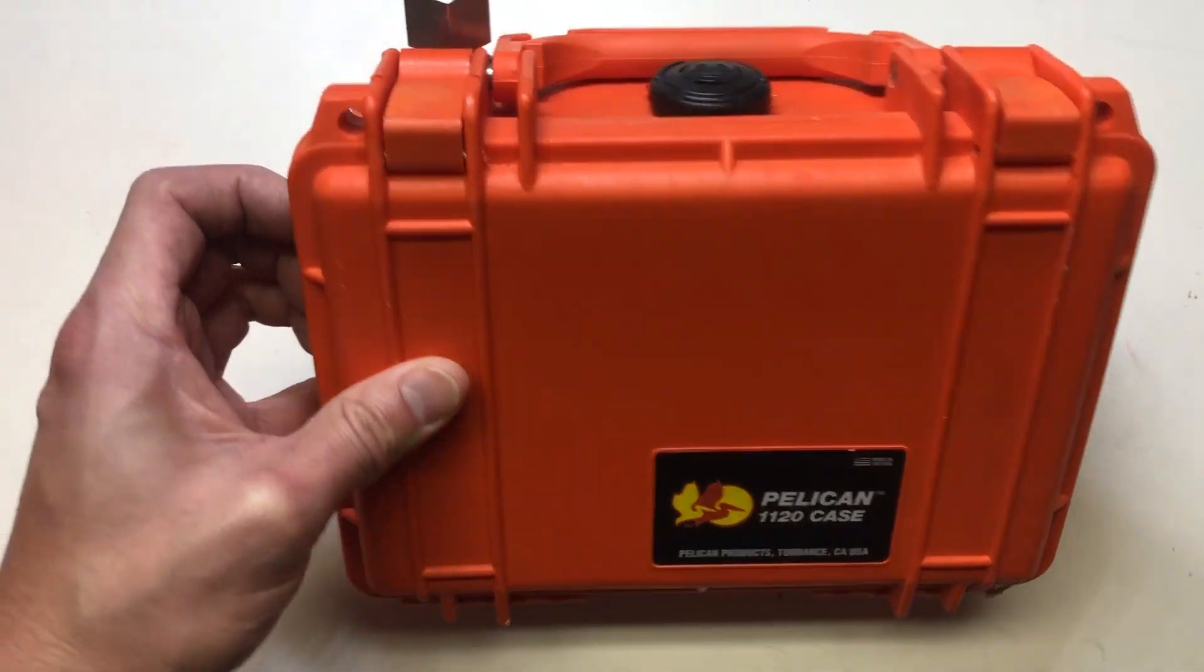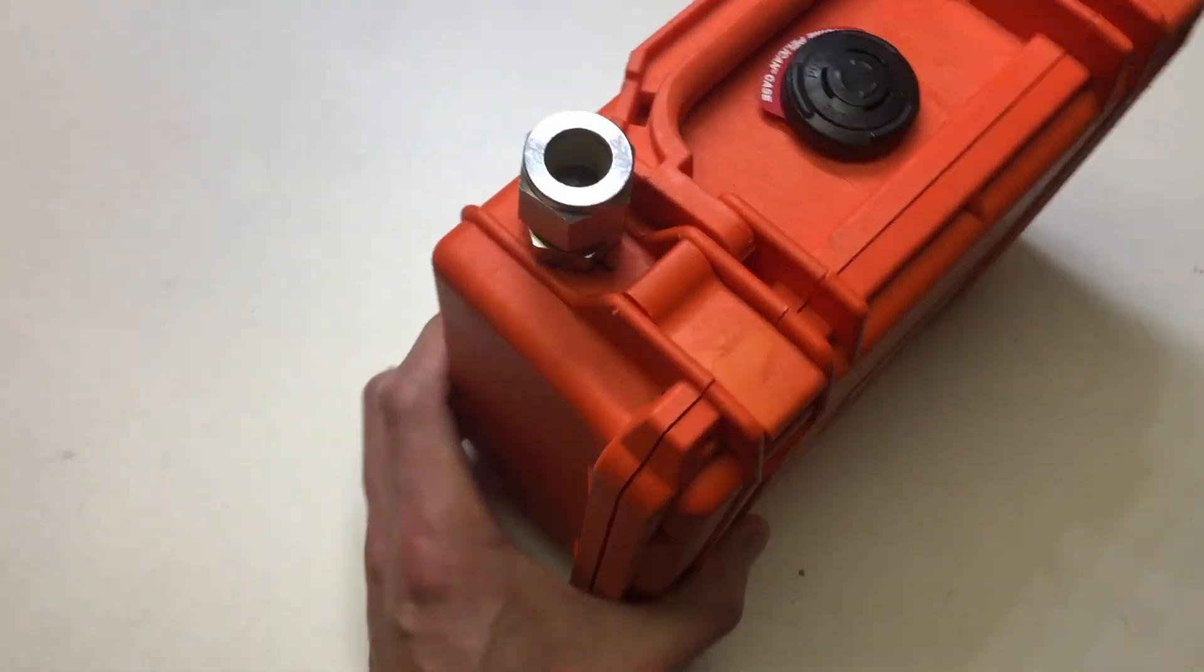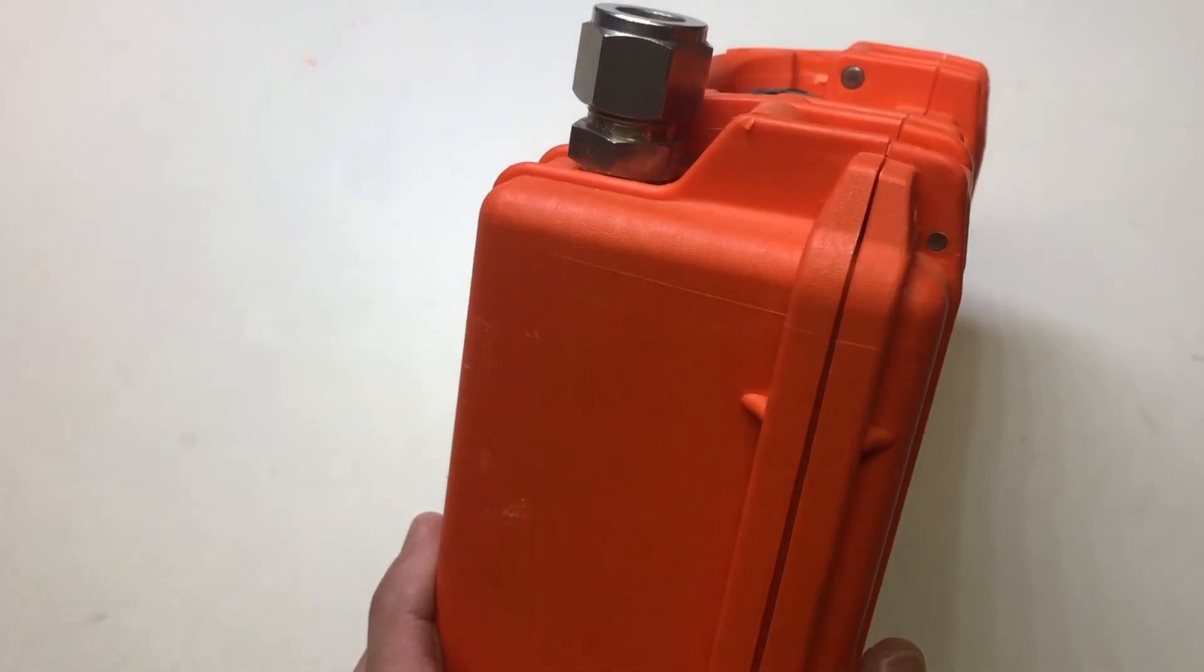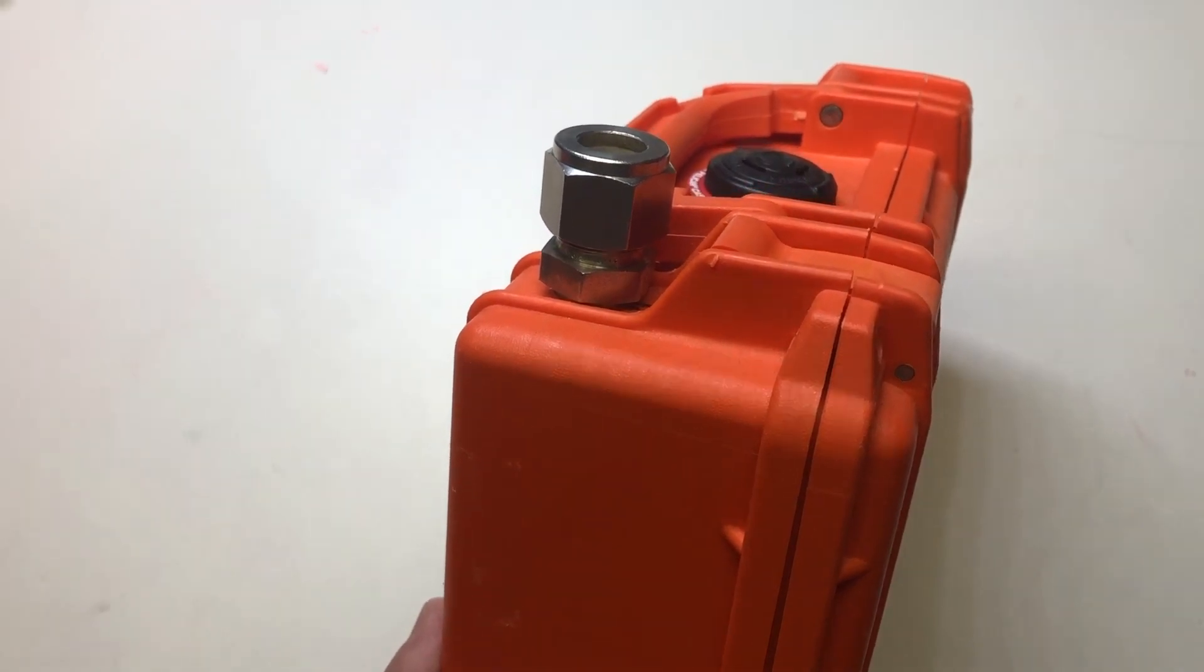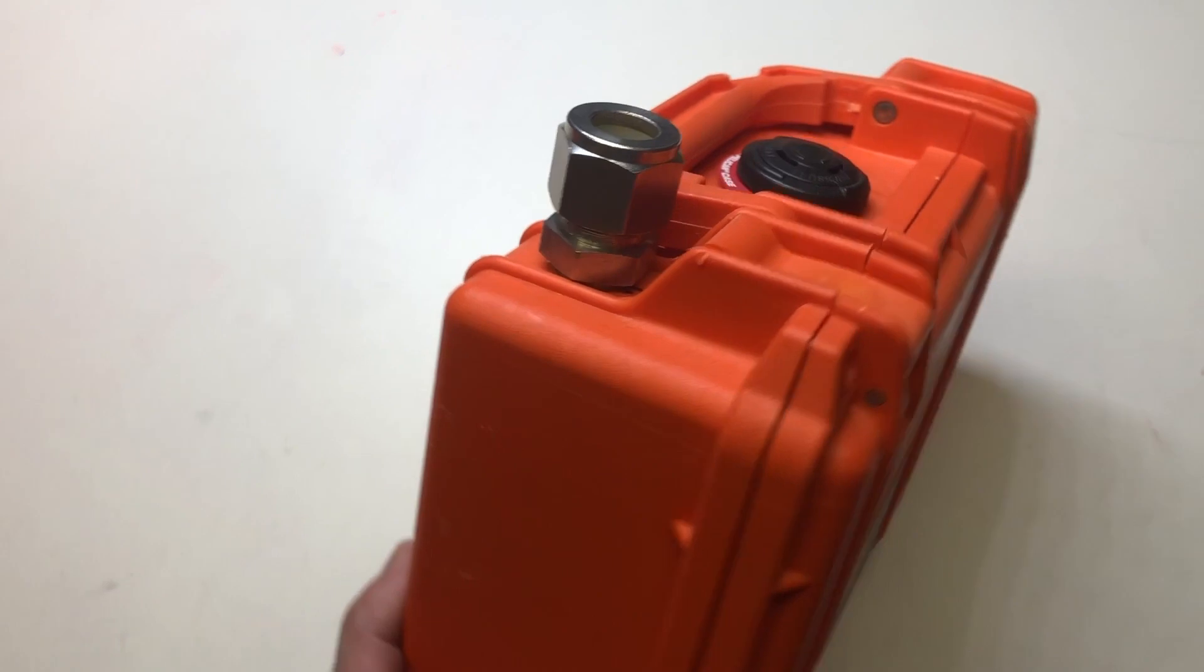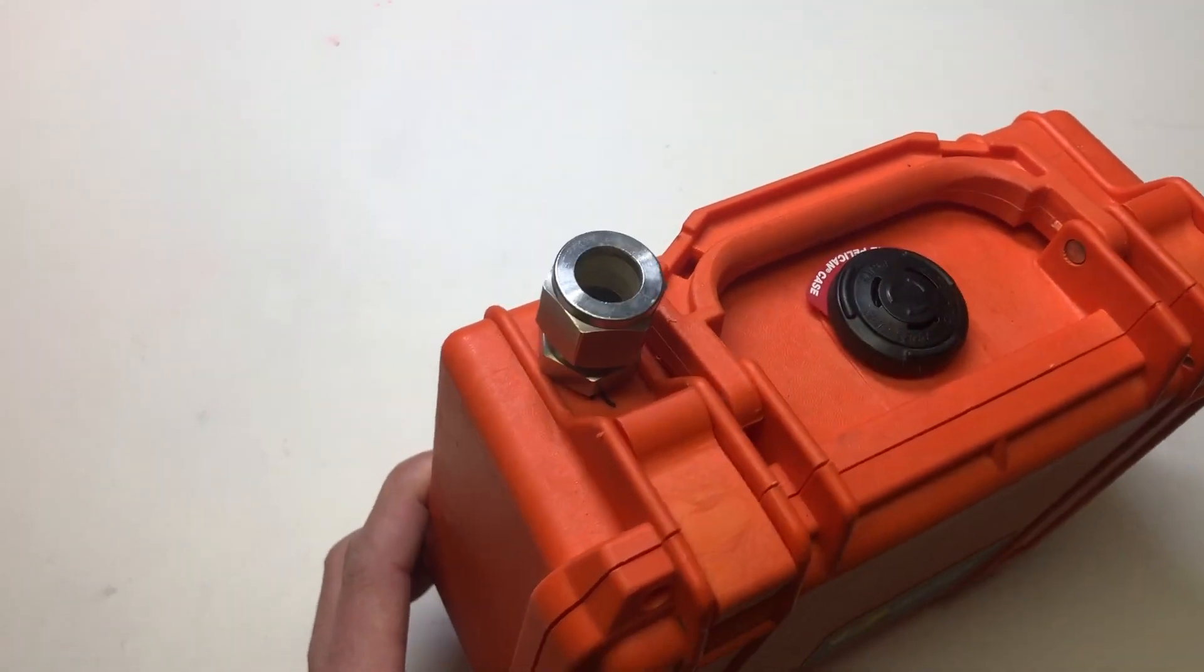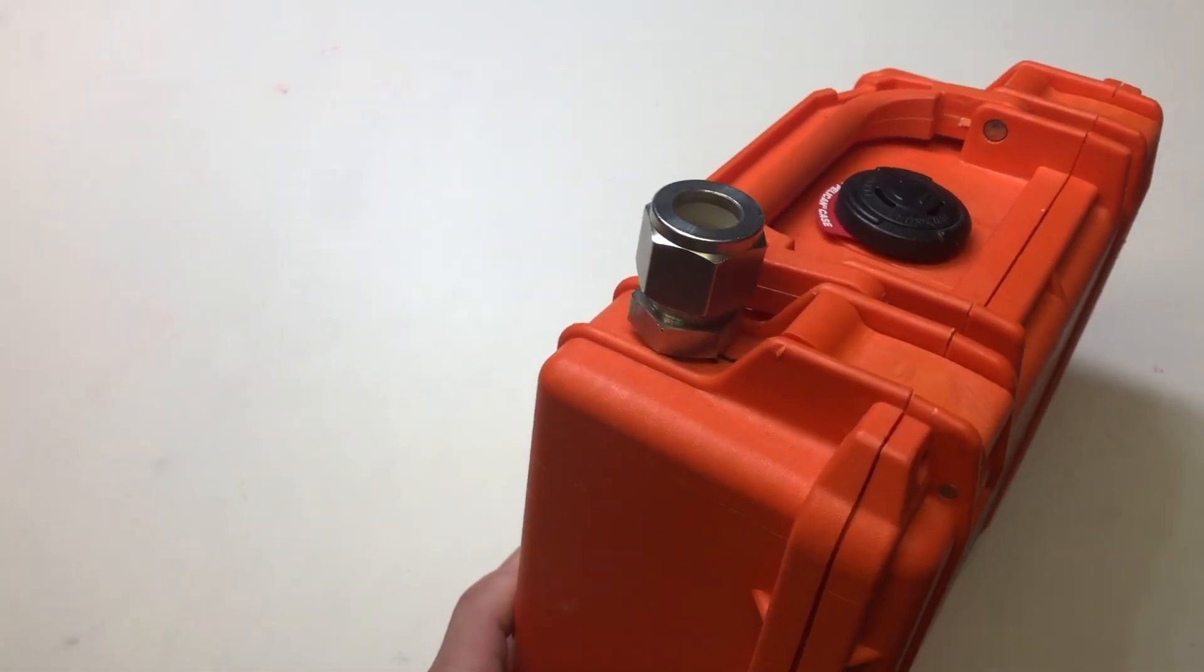What we have is a Pelican 1120 case. I drilled a hole on the top and installed a fitting. I believe this is a half inch NTP fitting to half inch tube fitting, compression fitting. This is actually a Swagelok fitting, which is kind of expensive, but I had access to a couple of these.